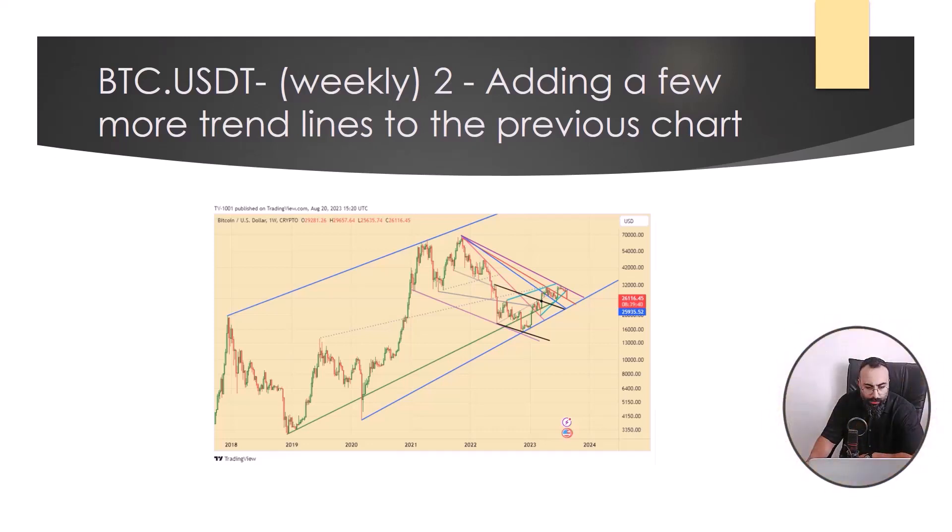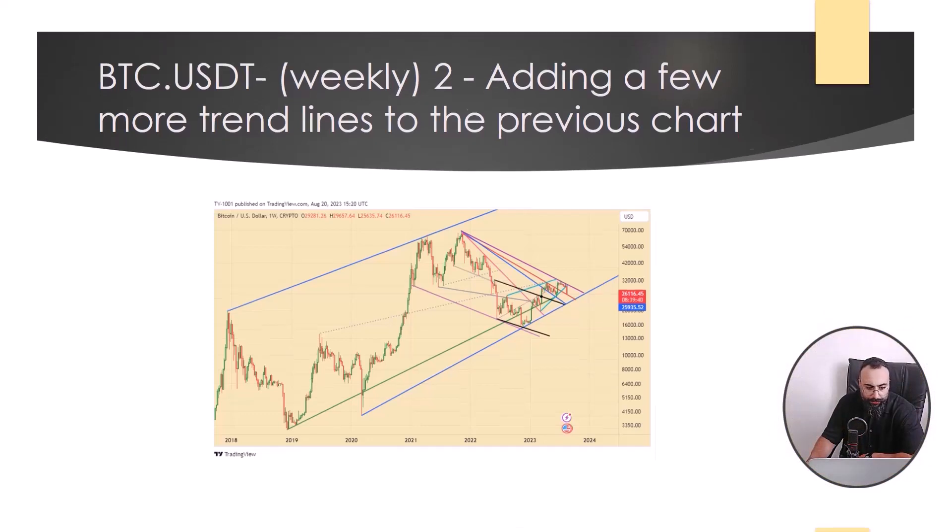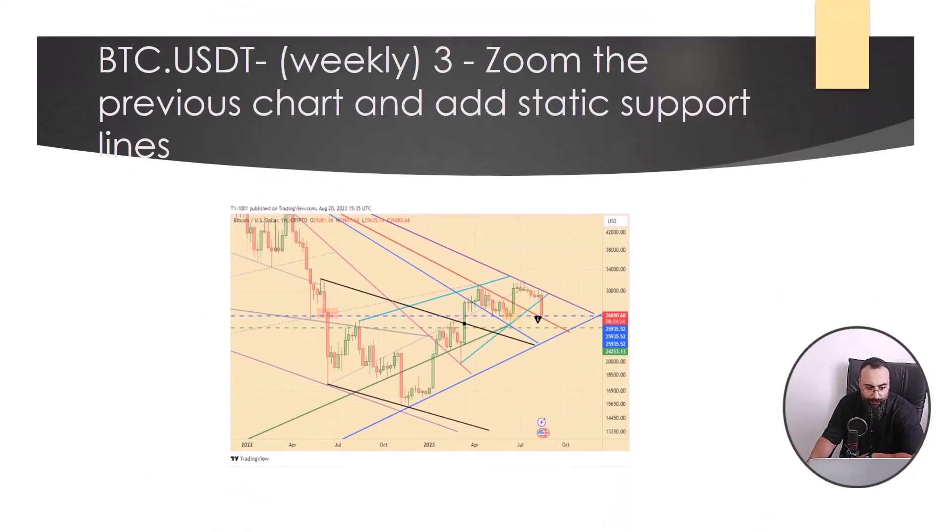And the amount of decrease below this corner depends on the height of the price before entering the corner. Now, let's zoom the previous chart and add static support lines. As mentioned before, considering that the price has not reached this pullback line after increasing and leaving above the black trend line in the area marked with a black circle.